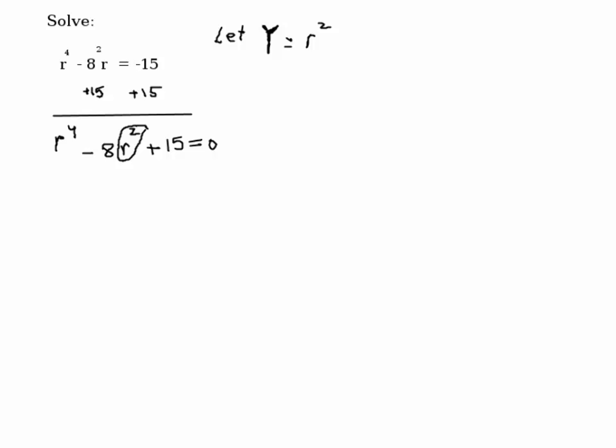If I square both sides here, then you can see that y² would be r⁴. You do this every time you see two variables where one is the square of the other. You let the one with the lower exponent equal to some variable like y.